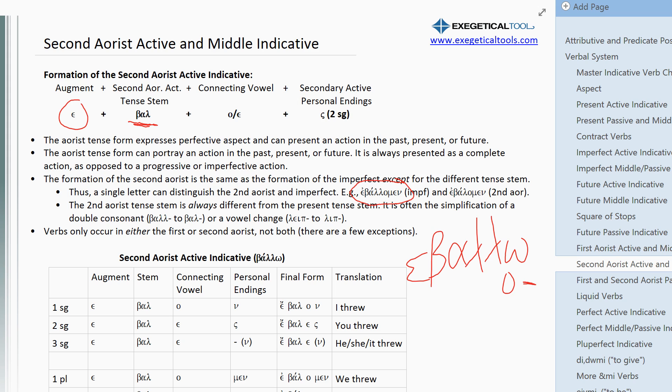So, ebalamin is the 1st person plural. But, for the 2nd Aorist, it's going to be the same except it uses a different stem. So, you're still going to have this omicron epsilon connecting vowel. And, you're also going to use the secondary active personal endings, just like with the imperfect active indicative.